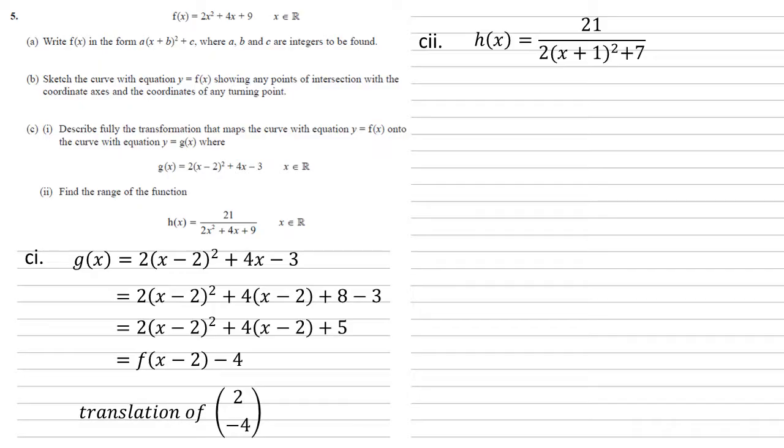The reason I've done this is because in completed square form we've got our square there and we know that (x + 1)² has to be greater than or equal to 0, hence the denominator has to be greater than or equal to 7. This means that h(x) must be less than or equal to 21/7, hence less than or equal to 3.